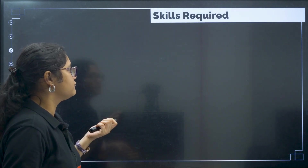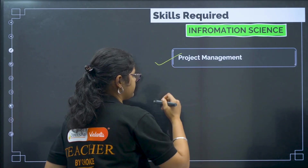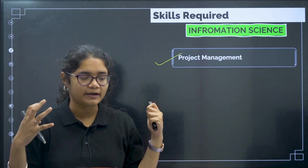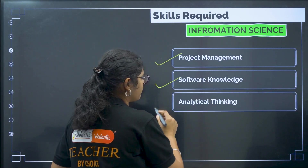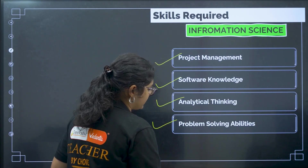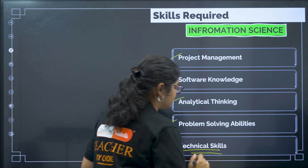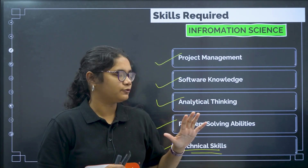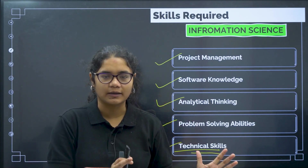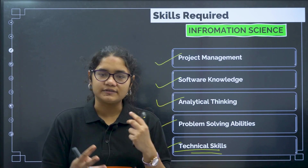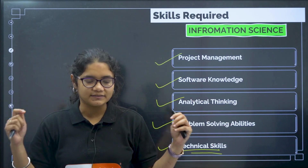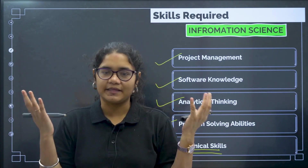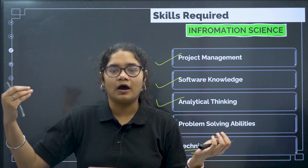Now let us see what skills are required for information science. These include project management — if you are someone who can manage things well — software knowledge, analytical thinking, problem-solving abilities, and technical skills. If you look at the skill sets, they are more or less the same for both branches, and some subjects also overlap. So there is not a very vast difference between computer science and information science, but computer science is more about innovating and creating, whereas information science is more about implementing.